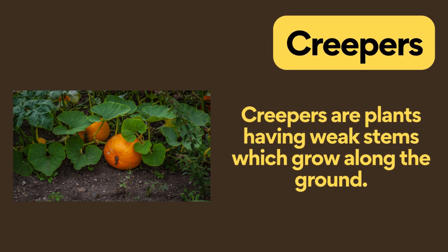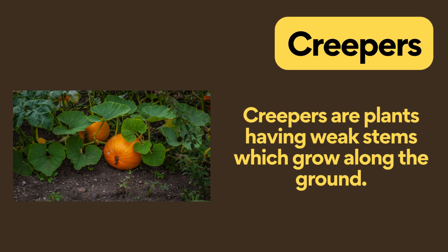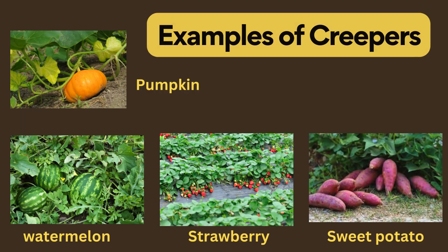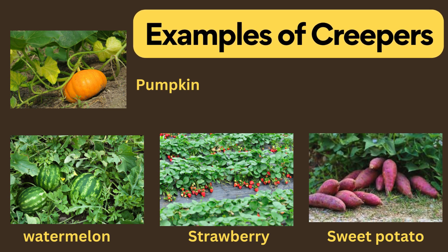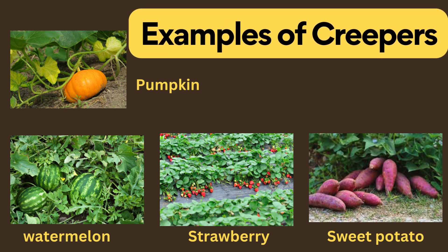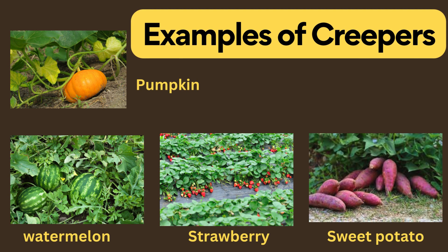Creepers are plants which grow along the ground. Examples of creepers: pumpkin, watermelon, strawberry, and sweet potato.